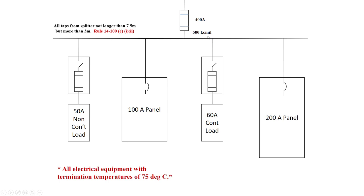The second part of this rule says suitably protected from mechanical damage, not more than 7.5 meters long, terminates in a single overcurrent device rated or set at a value not exceeding the ampacity of the conductor. Beyond the single overcurrent device, the conductor shall be permitted to supply any number of overcurrents. Let's start out here.